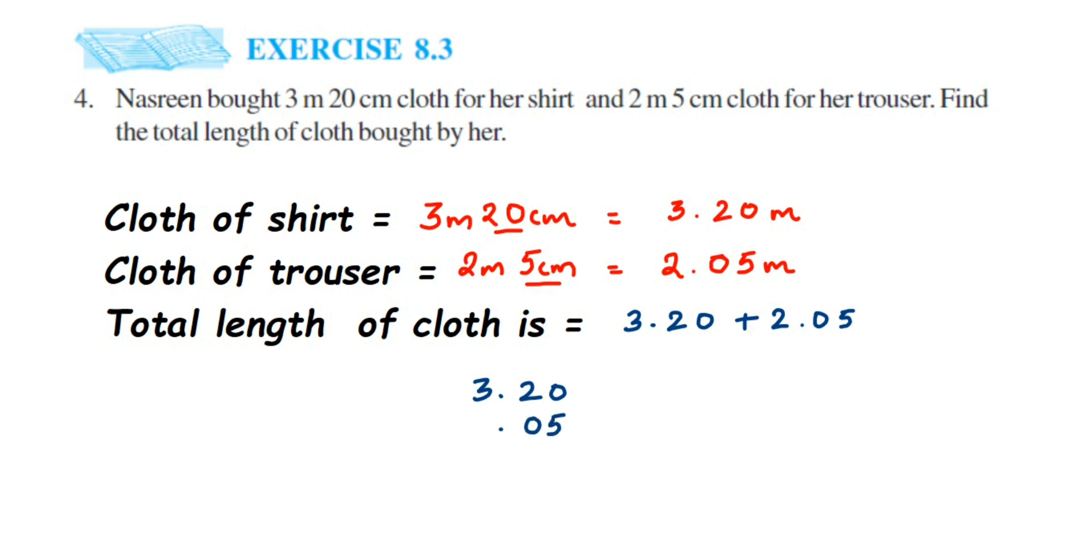Once you have placed it, just add it. So 0 plus 5 is 5, 0 plus 2 is 2, put decimal, 3 plus 2 is 5. So 5.25. So it is 5.25 meter cloth she requires in total.